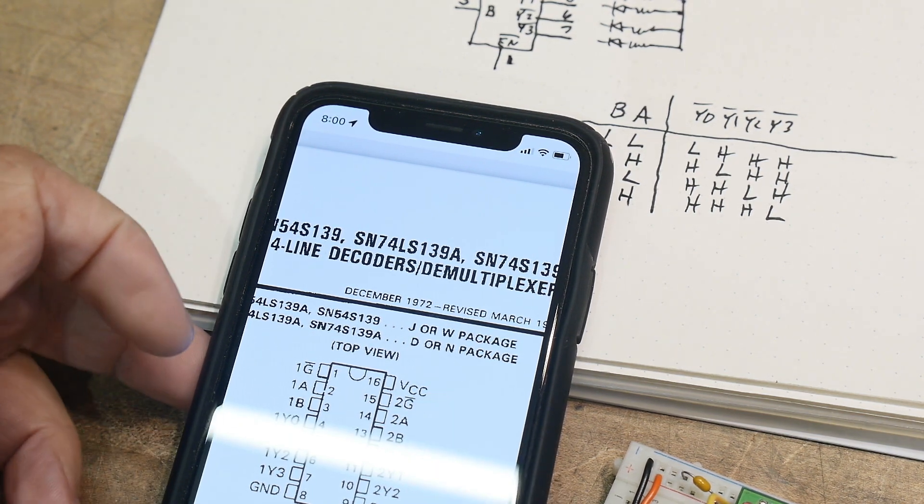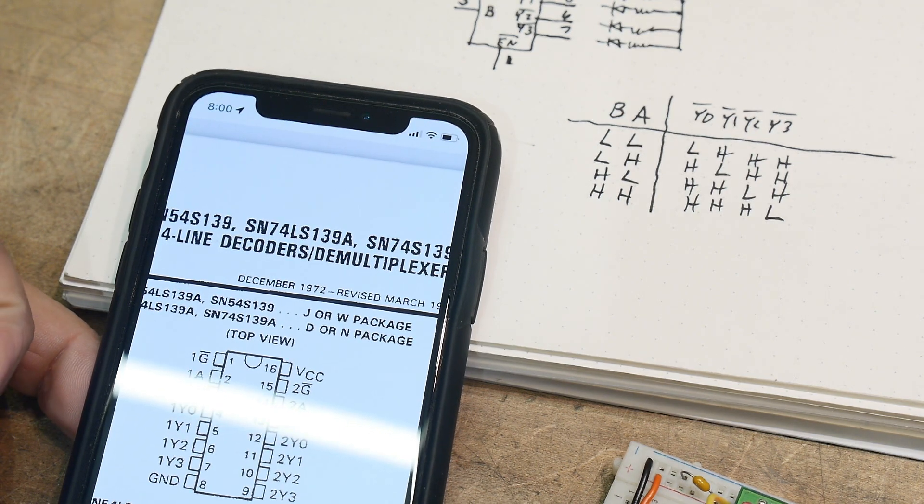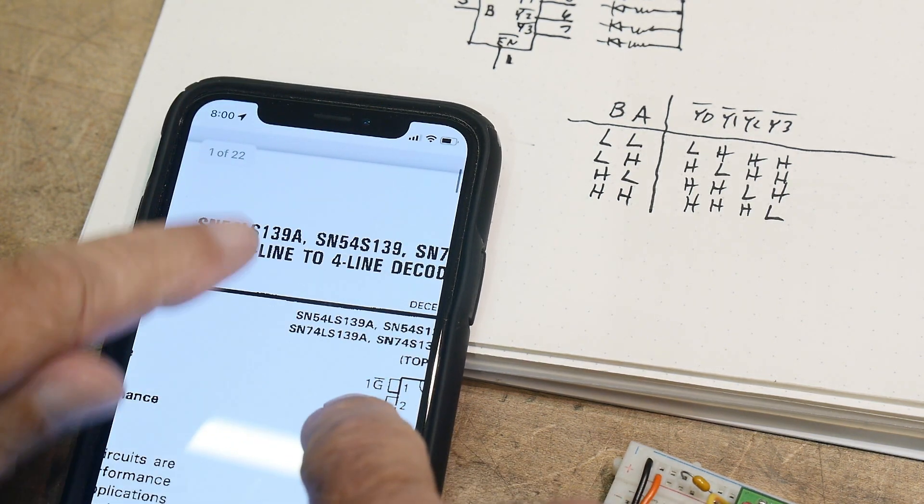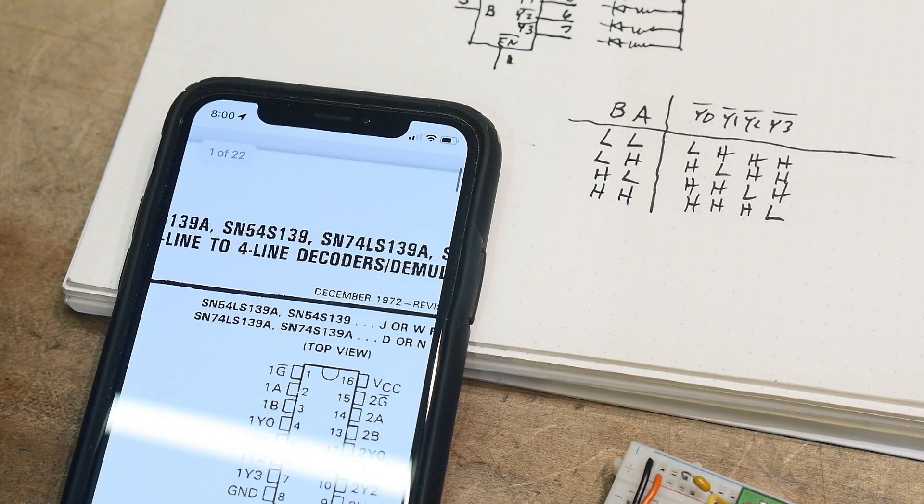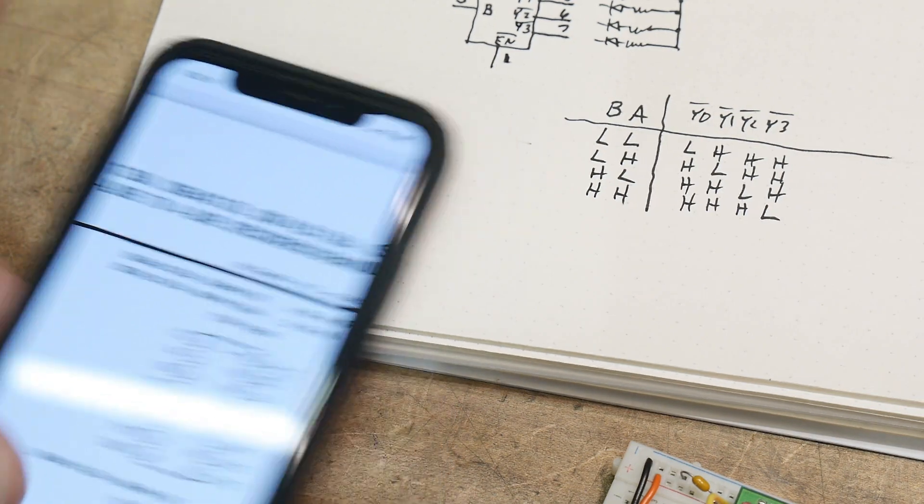You'll see it a lot in address decoding. What is it? It's a dual two-line to four-line decoder. So two lines in, four lines out.